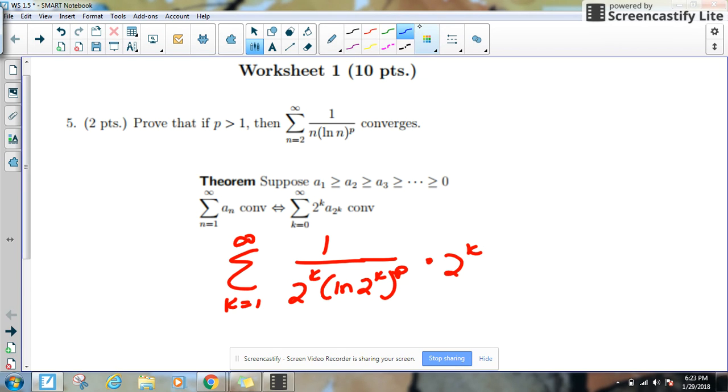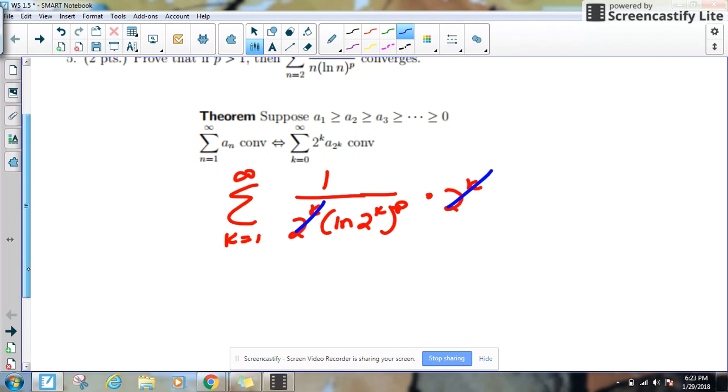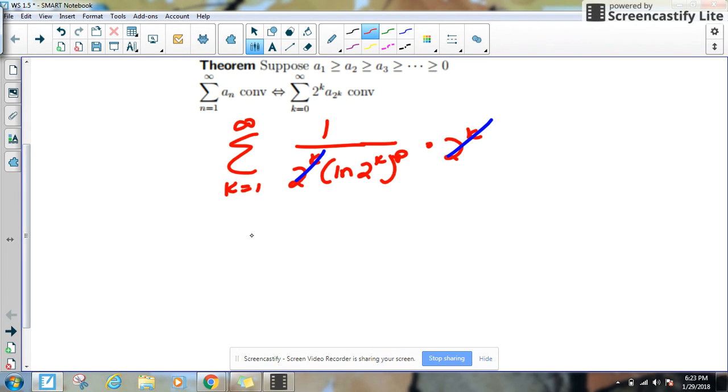All right, and what we're going to see here is the 2 to the k and the 2 to the k here cancel. So let's see if we can clean these terms up. So we have the sum from k equals 1 to infinity of 1 over the natural log of 2 to the k, all raised to the p in parentheses.